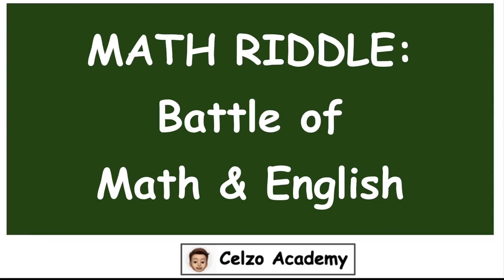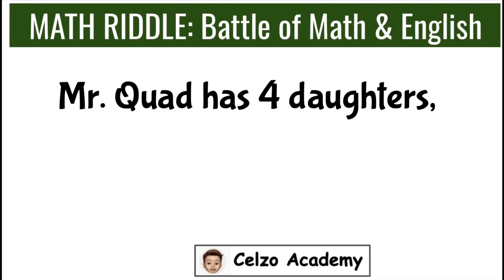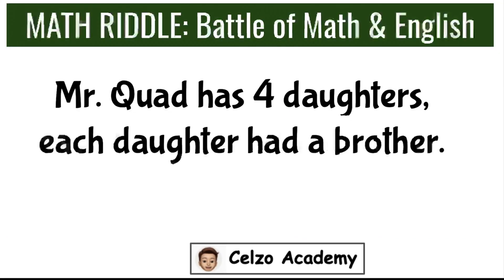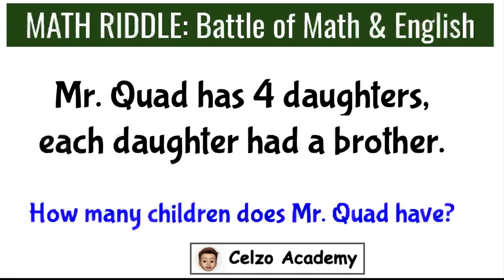Are you ready for another math riddle? The Battle of Math and English. Mr. Quad has four daughters. Each daughter had a brother. How many children does Mr. Quad have? Give it a try — you have 15 seconds.